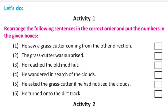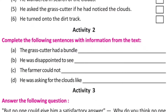Activity 1: Rearrange the following sentences in correct order and put the numbers in the given boxes. Number 1: He wondered what happened and went in search of the clouds. Number 2: He reached the old mud hut. Number 3: He turned onto the dirt track. Number 4: He saw a grass cutter coming from the other direction. Number 5: He asked the grass cutter if he had noticed the cloud.